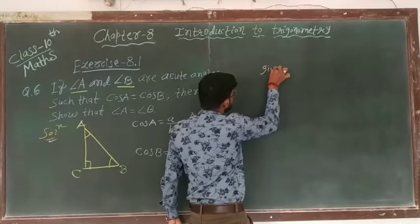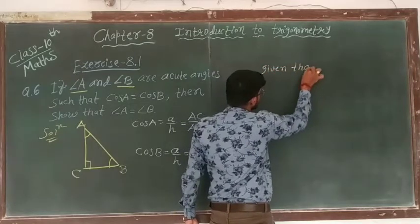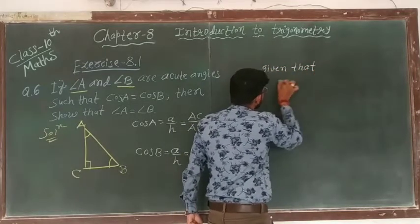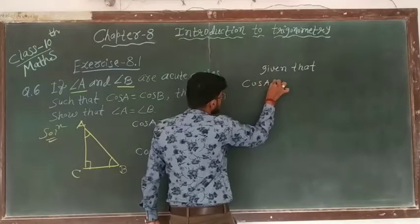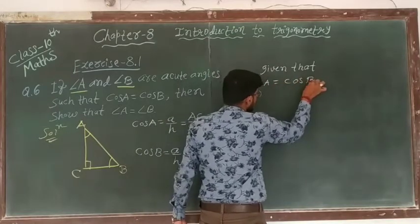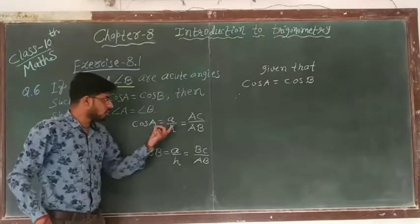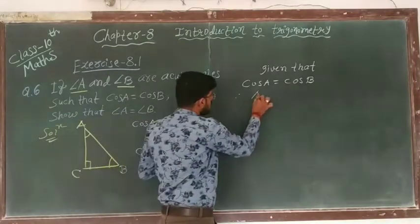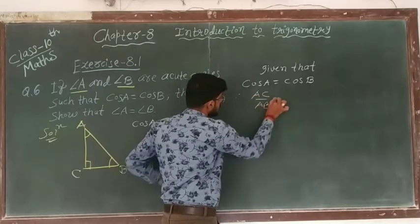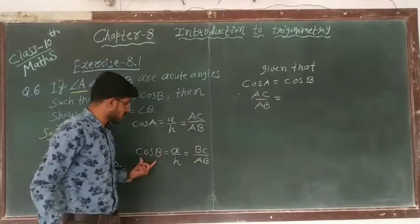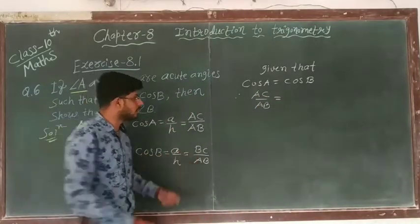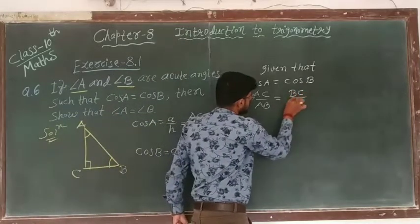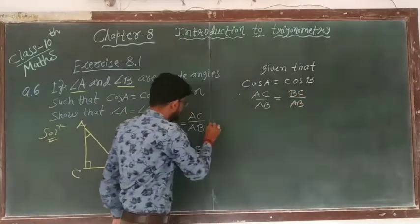Given that cos A equal to cos B. Now we can write cos A equals cos B. AC upon AB will be equal to BC upon AB. Now this is equation number 1.